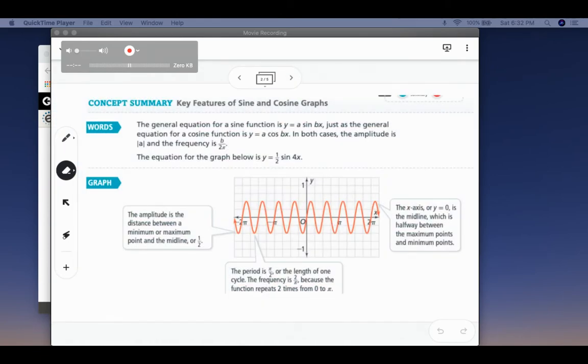This is an overview of what we're going to talk about. So we have y equals a sine of bx. We can also write y equals a cosine of bx. So we're going to focus on the a and the b and how they affect your equation.